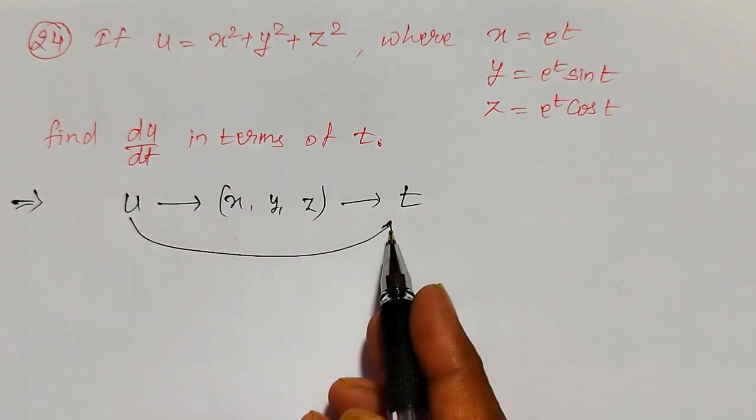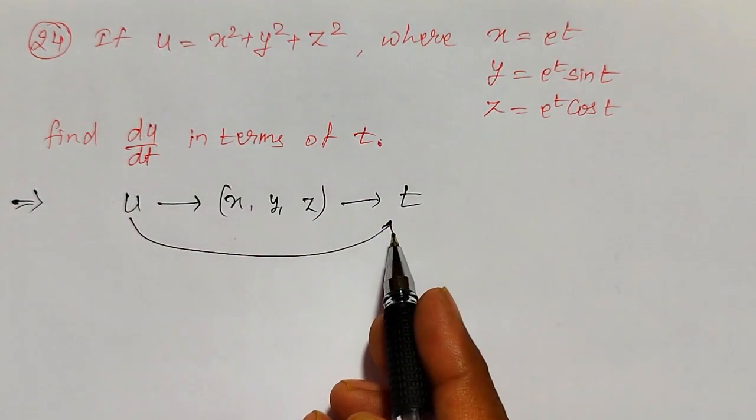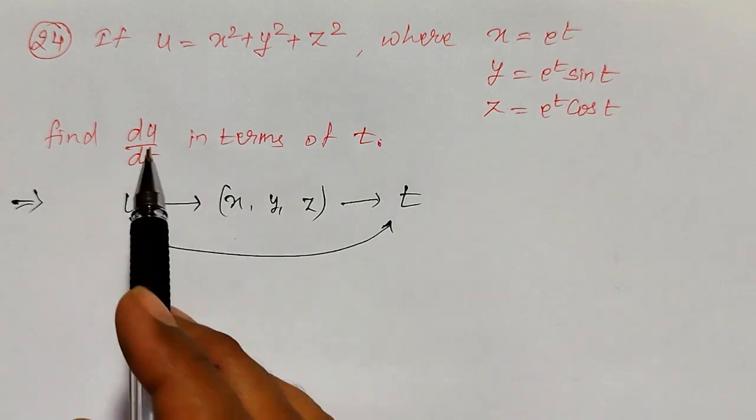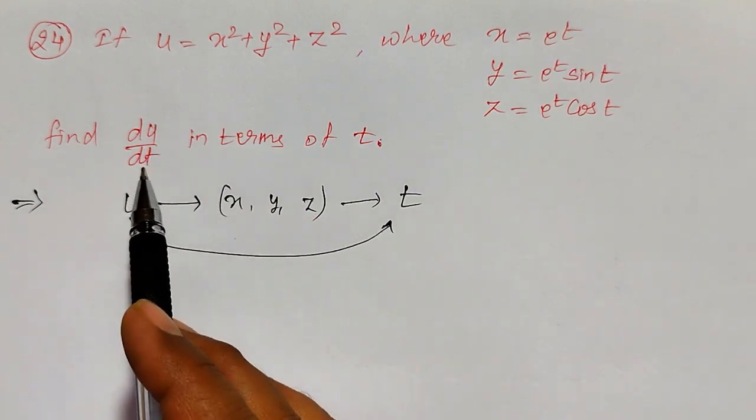Therefore, u is indirectly a function of single variable t only. Therefore, there exists an ordinary derivative du/dt.